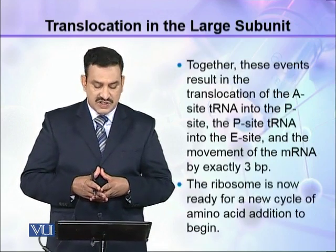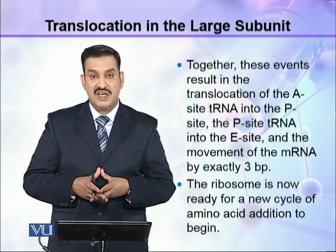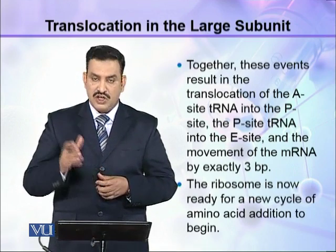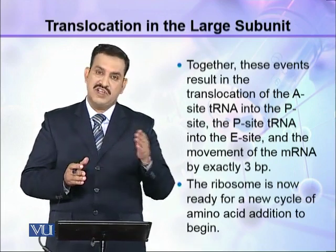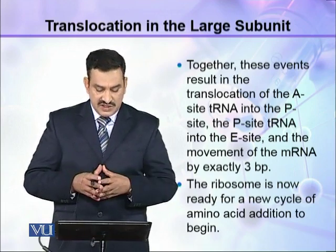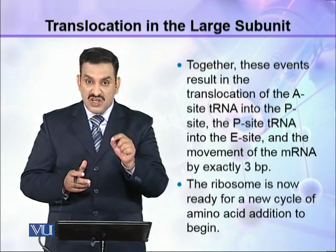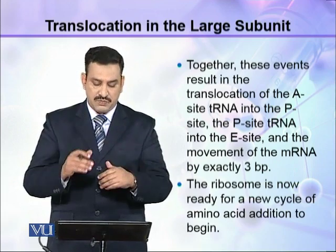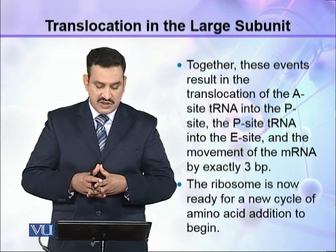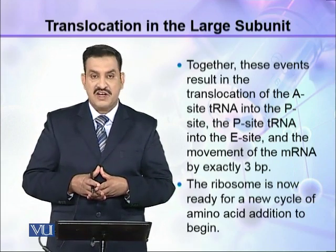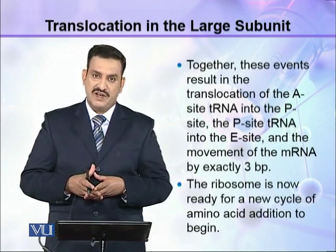These events result in the translocation of the A-site tRNA into the P site, the P-site tRNA into the E site, and the movement of mRNA by exactly three base pairs. The ribosome is now ready for a new cycle of amino acid addition to begin.